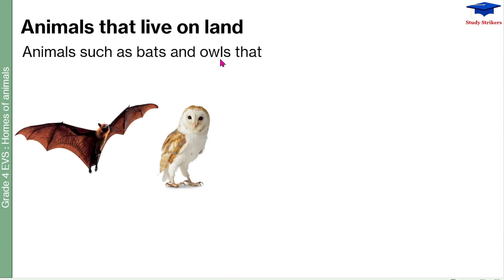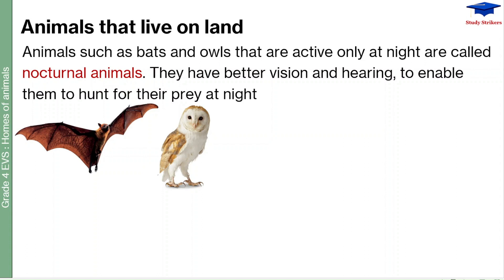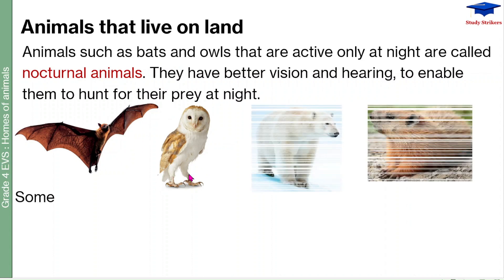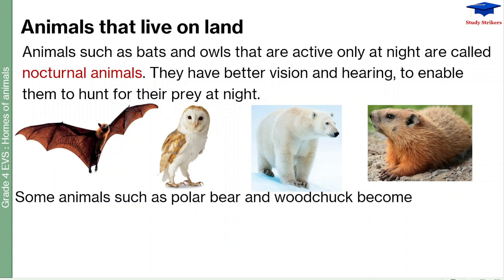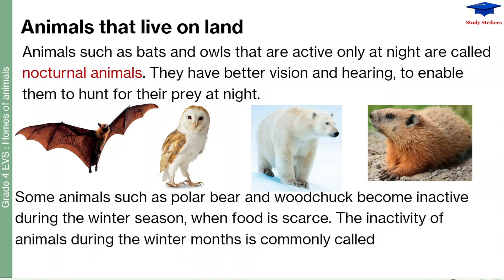Animals such as bats and owls that are active only at night are called nocturnal animals. They have better vision and hearing to enable them to hunt for their prey at night. You can see the bat and the owl here. Some animals such as polar bears and woodchucks become inactive during the winter season when food is scarce. The inactivity of animals during the winter months is commonly called hibernation or winter sleep.